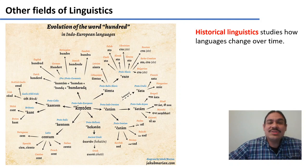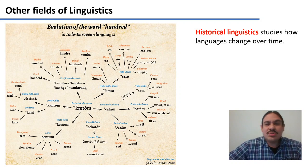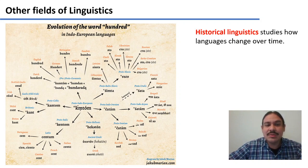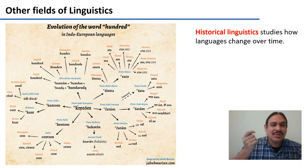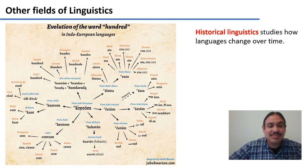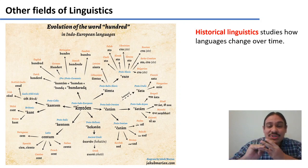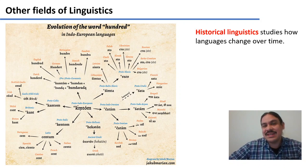Historical linguistics studies how languages change over time. About 5,000 to 6,000 years ago, there was a language called Proto-Indo-European. The word for 100 in Proto-Indo-European was something like 'kumtum.' From this language, many other languages emerged. In English it became 'hundred.' Proto-Indo-European 'kumtum' became Proto-Italic 'kentum,' then Latin 'kentum,' and ultimately Spanish 'cien.' Other languages from Proto-Indo-European include Irish, Greek, Persian, Hindi, and Russian, and you can see in the chart how they have all changed over time. Historical linguistics studies these processes.